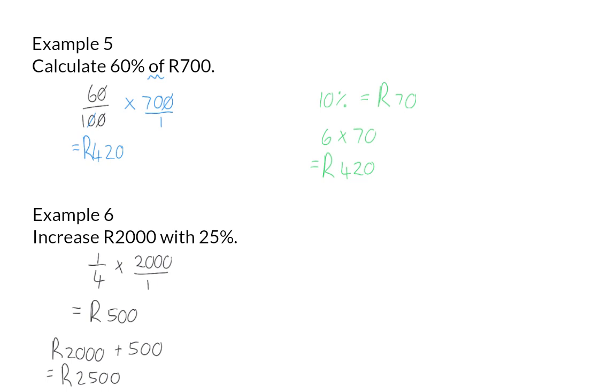And here, once again, we have another approach to this question. The original 2,000 rand can be seen as 100 percent. We need to increase this percentage with another 25 percent, so we need to determine what 125 percent is, and that can be written as 125 over 100.